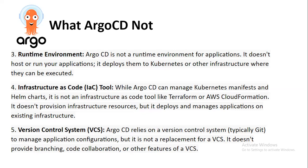Argo CD deploys applications to Kubernetes or other infrastructure where they can execute. Next, Argo CD is not an infrastructure as code tool. While Argo CD manages Kubernetes manifests and Helm charts, it is not an IaC tool like Terraform or AWS CloudFormation. It doesn't provision infrastructure resources, but it does deploy and manage applications on existing infrastructure.